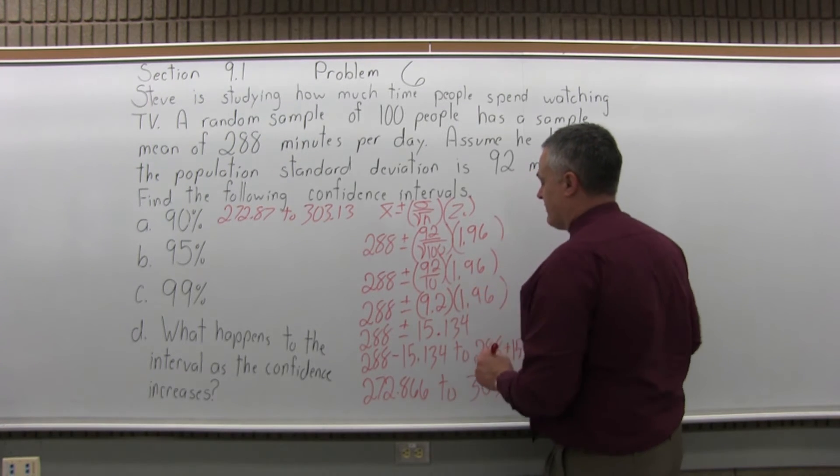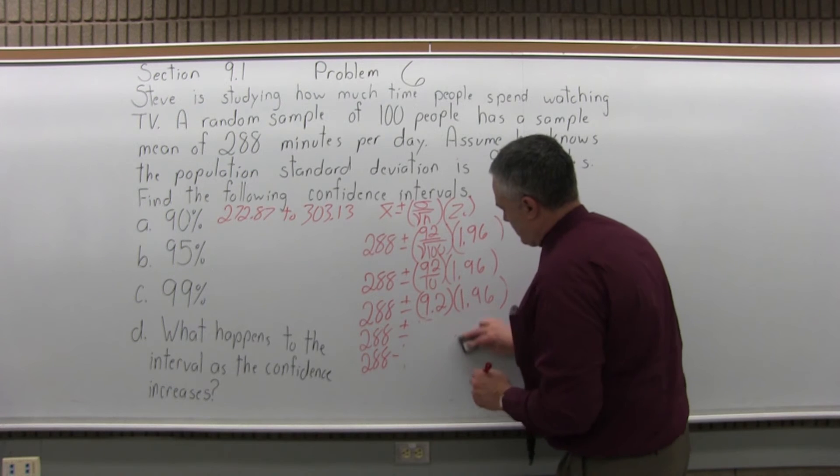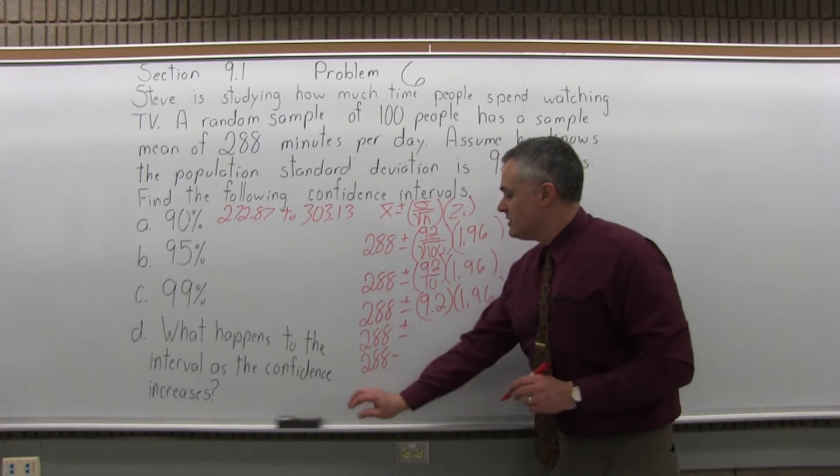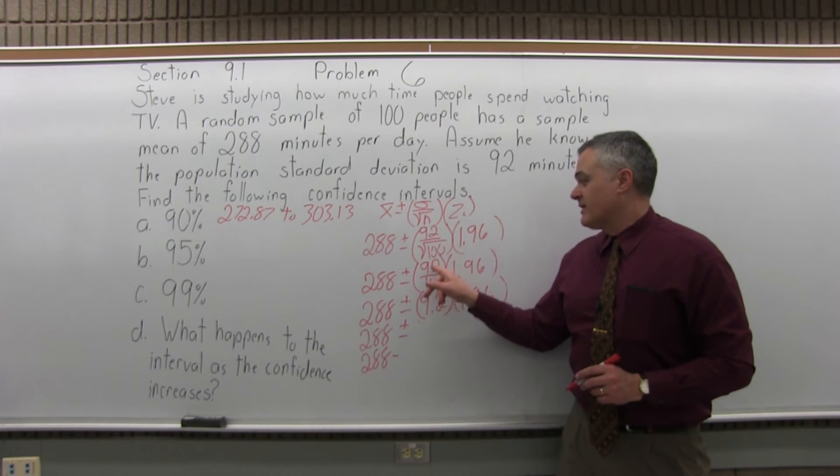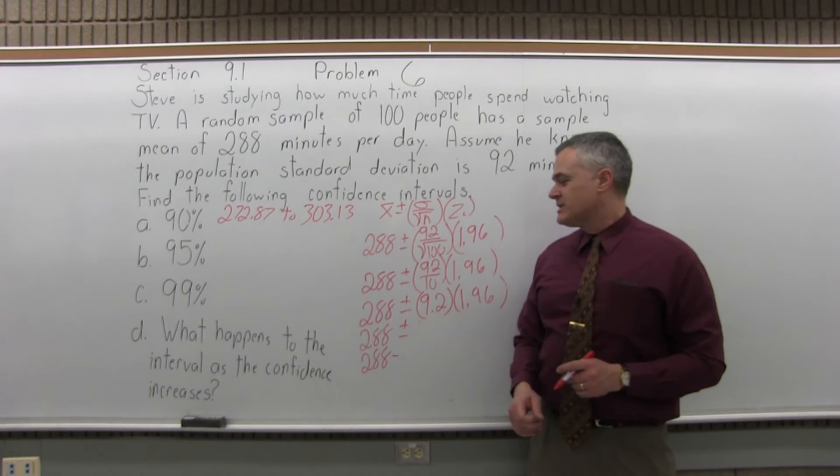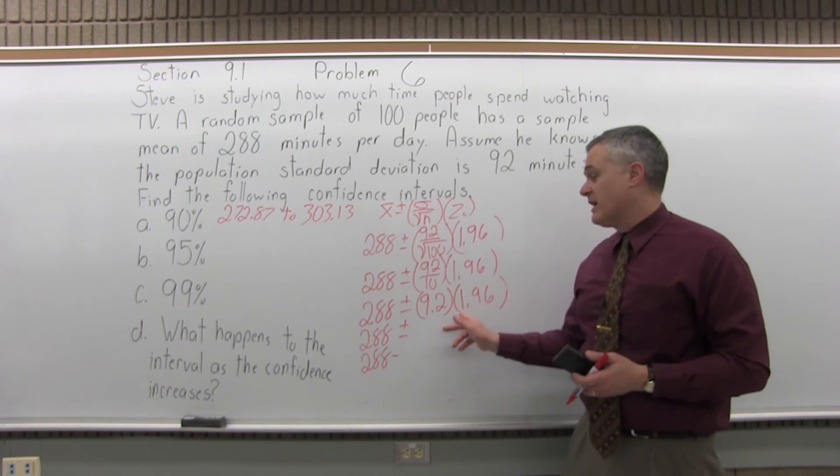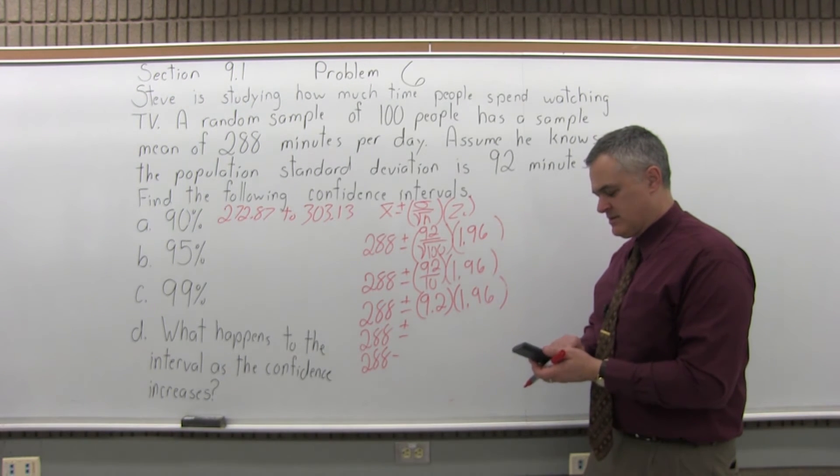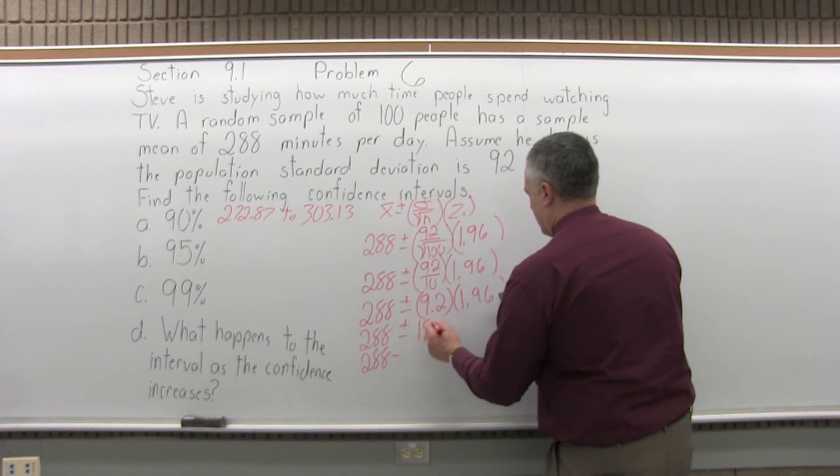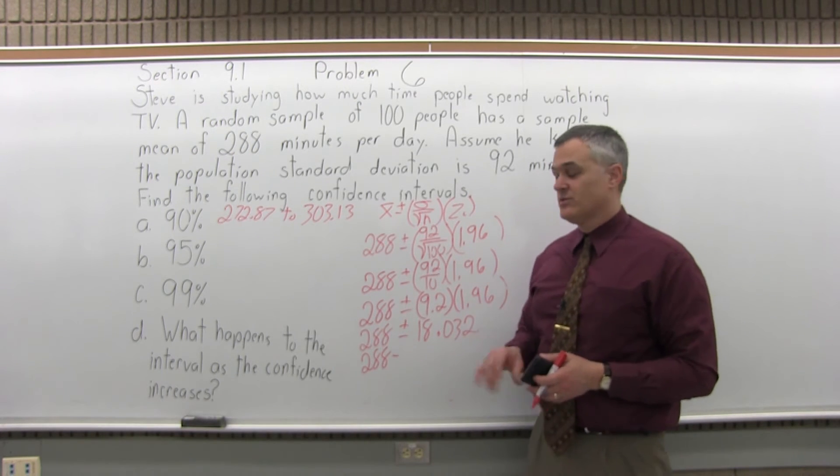All the way down to the previous computation, I'm just going to change 1.645 to 1.96 for 95%. The square root of 100 is still 10, and 92 divided by 10 is still 9.2. Now I multiply 9.2 times 1.96, which gives 18.032. That's the margin of error for 95%.